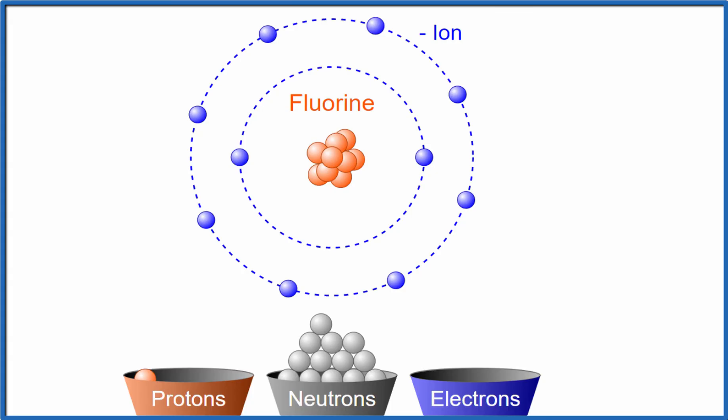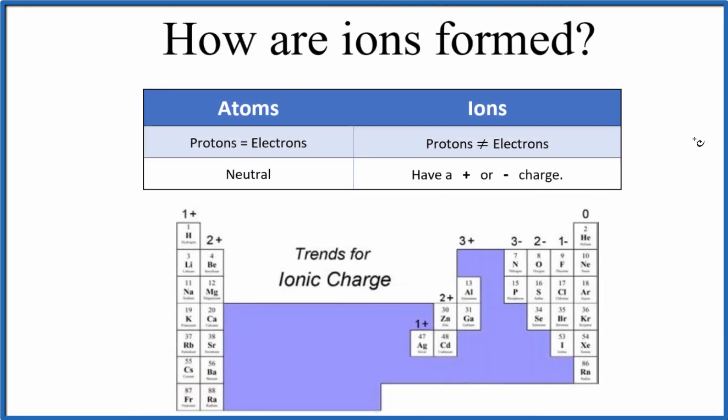Let's go back. So to sum up, atoms can become ions by either losing or gaining electrons. And when they do that, the result is that the number of protons does not equal the electrons, and we have either a positive or a negative charge.